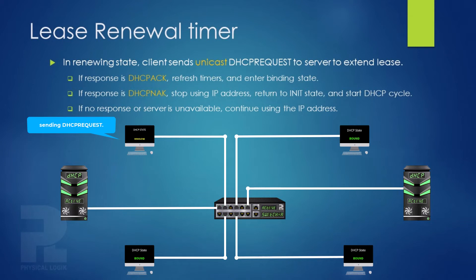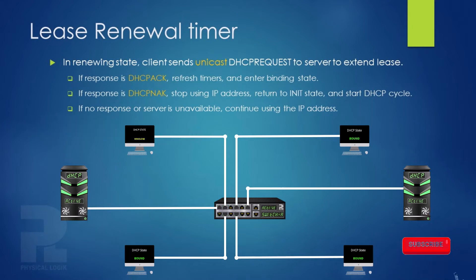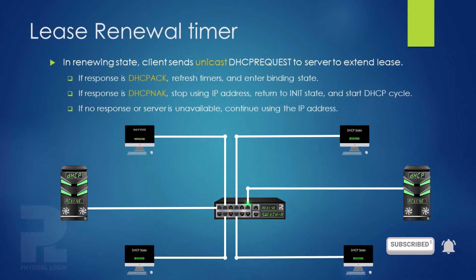The client does this to request an extension of its lease. It will remain in the renewing state until it receives a DHCP acknowledgement message from the server, after which it enters the binding state and resets its timers. However, if the client receives a DHCP negative acknowledgement message, it enters the initializing state and restarts the DHCP cycle.